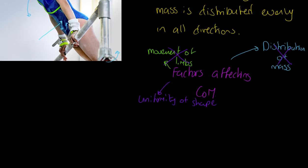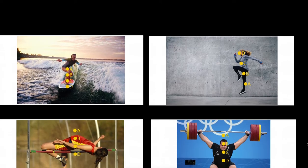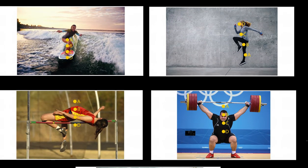Let's apply this principle to some sporting examples. For all five, which letter — A, B, C, or D — most accurately represents the likely center of mass? For our surfer, she has brought her arms out and lowered her body, so her center of mass moves down slightly from her navel, but not far. She hasn't put her head really low or extended her arms forward or back, so point A is likely to be her center of mass.